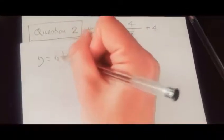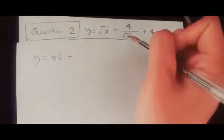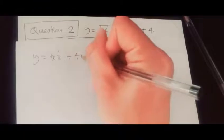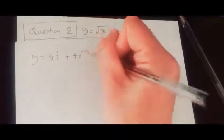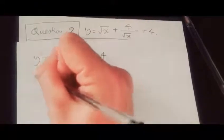Plus 4 over root x, so anything over anything that's reciprocal has a negative power. Since root x is power half, it's going to be 4x to the power negative half, and of course we just stick in the plus 4. Now on differentiating this, what do we get?